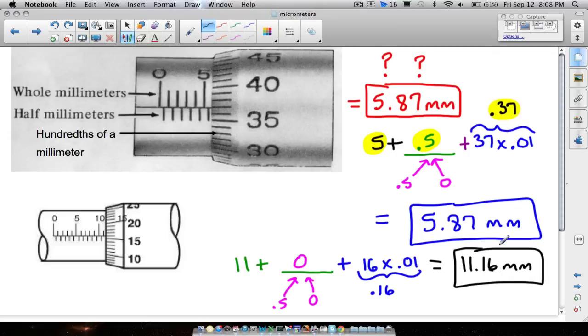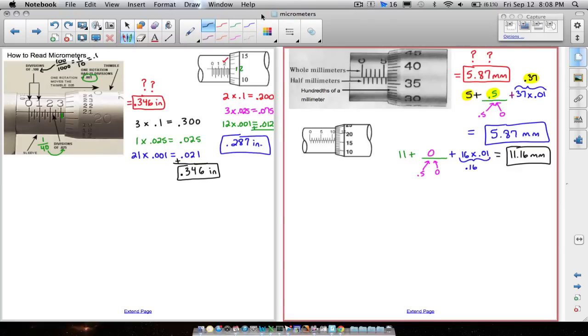Now notice you are reading these two micrometers in two different ways. And the reason why is because one of them is in terms of an inch. Remember that thimble has 25 divisions, whereas this micrometer here with millimeters has 50 divisions on it. But we always use these numbers here, two examples of each. And that is it for this video. Hope it helped.